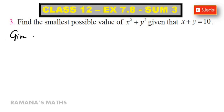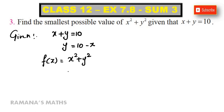Given x plus y is equal to 10, this means y is equal to 10 minus x. And f of x is equal to x square plus y square. Now, f of x is equal to x square plus 10 minus x the whole square.